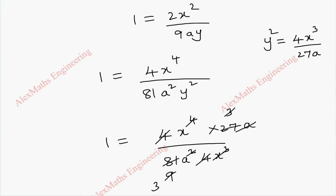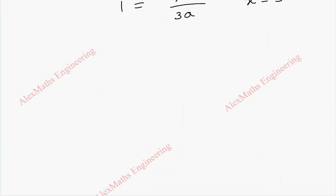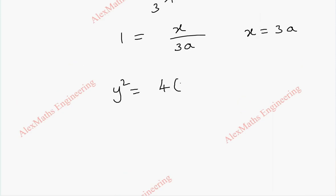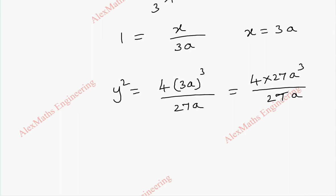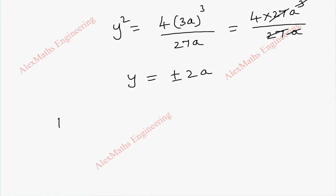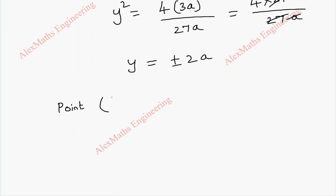Substituting x = 3a back into y² = 4x³/27a gives y² = 4 · 27a³/27a = 4a². Taking the square root, y = ±2a. So the two points are (3a, 2a) and (3a, −2a).